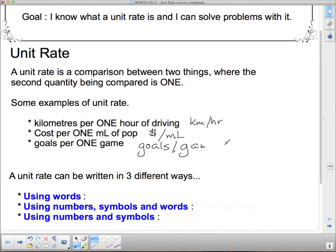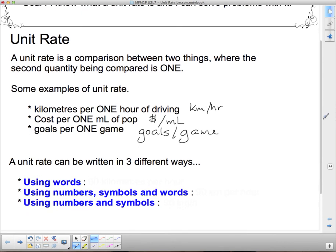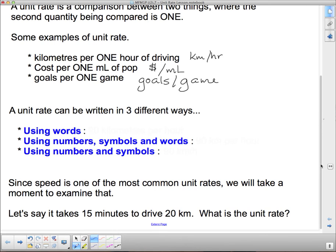A unit rate can be written in three different ways. It can be written using words, which we did above. And we would say, in this case, 90 kilometers per hour. Or we can use numbers, symbols, and words. So in this case, 90 kilometers per hour. And then the next one, using numbers and symbols, 90 kilometers with the slash in it that means per.